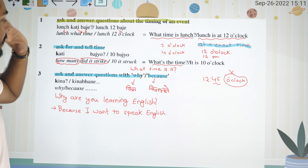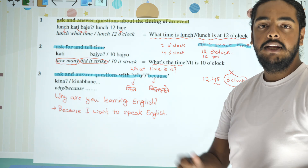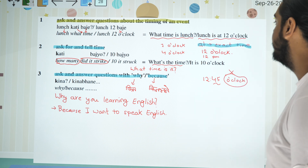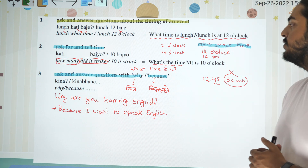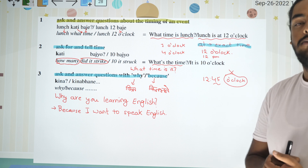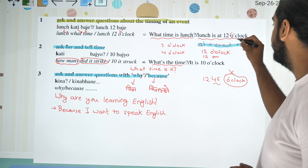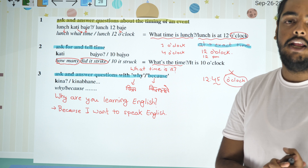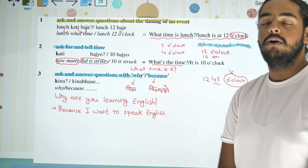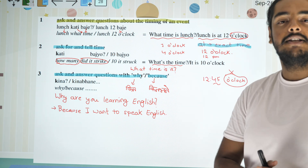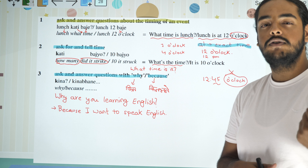So this is how to answer the questions. In the first question, you need to know: what time is lunch? What time is dinner? What time is breakfast? And the answer uses 'at': lunch is at 12 o'clock, breakfast is at 6 o'clock. But what time is it? What is the time? Or what time is it? And the answer is: it is 10 o'clock, 11 o'clock.